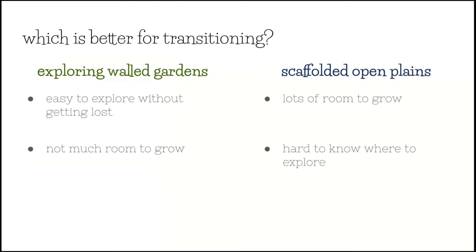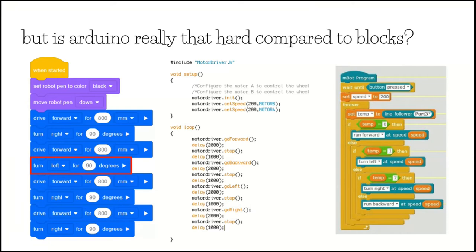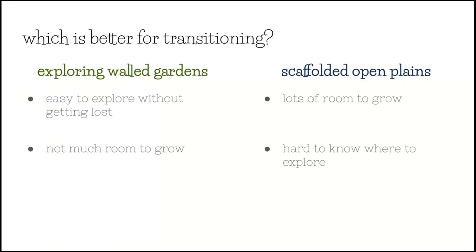Or do we want to take open plains and scaffold them using libraries — like that library we saw, which has the motor driver and allows us to say 'go left' and 'go backward' rather than having to type in electrical signals, which you might have to do with a normal Arduino library? Do we want those scaffolded open plains where there's lots of room to grow?